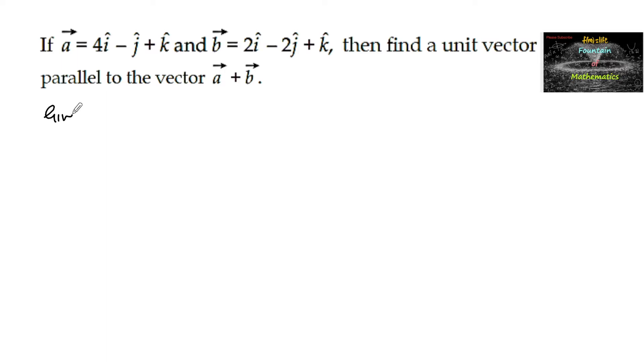Given vector a is equal to 4i minus j plus k and vector b is equal to 2i minus 2j plus k.